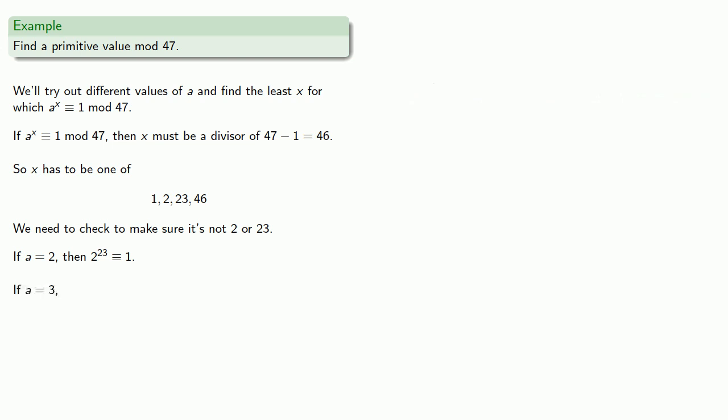For example, we might try 3, and again we'll apply our fast powering algorithm. 3 to the second isn't congruent to 1, but 3 to the 23rd is congruent to 1. So we tried 2, then 3.